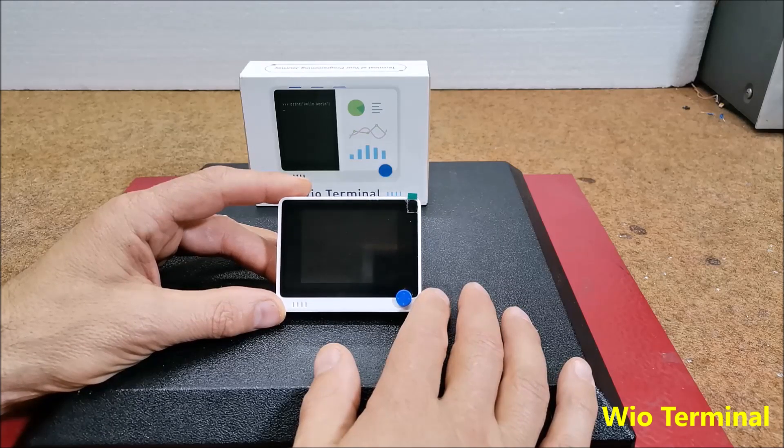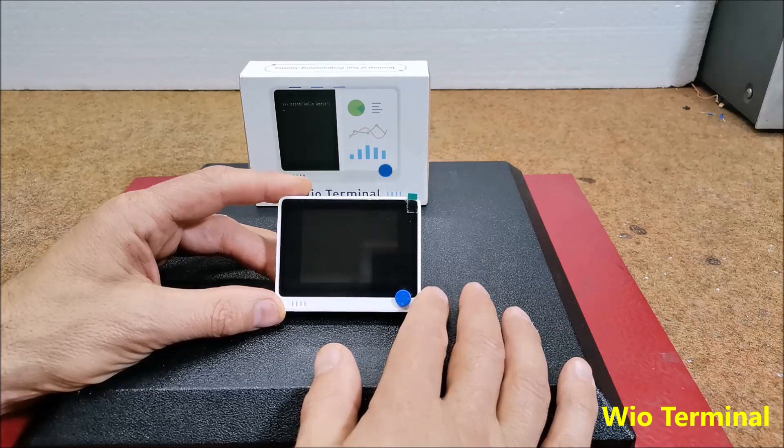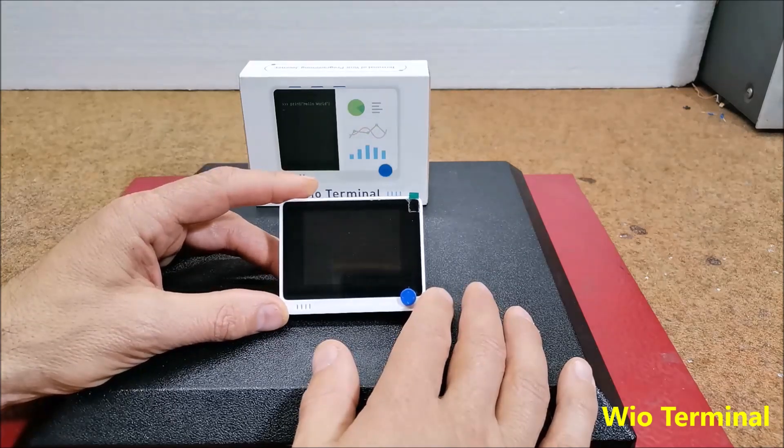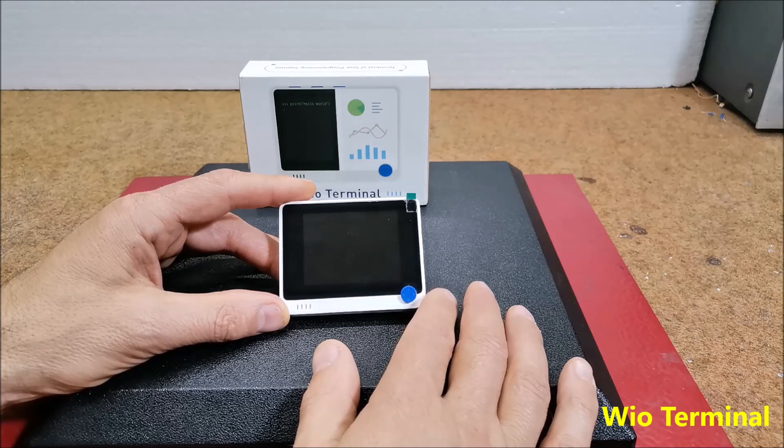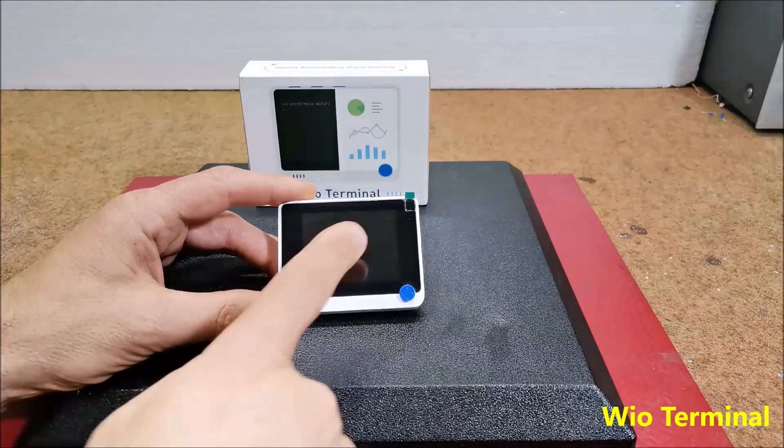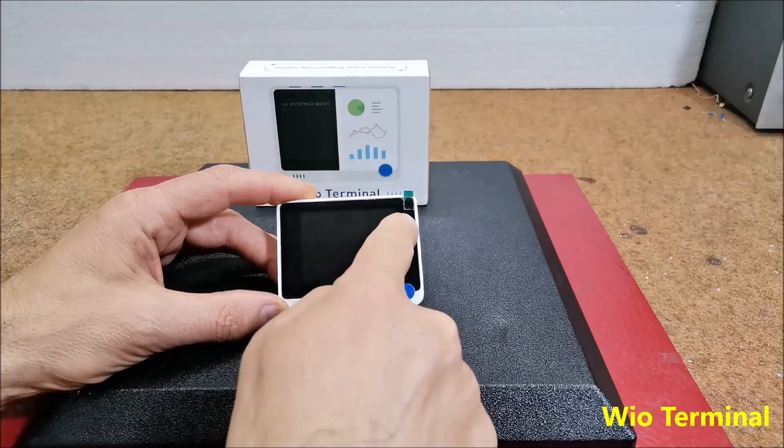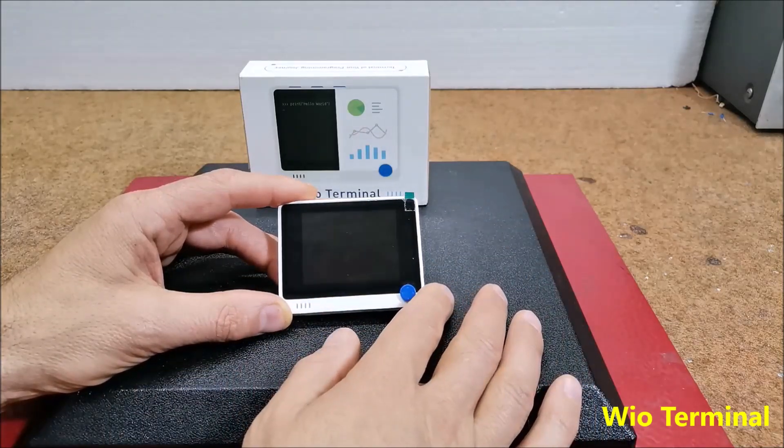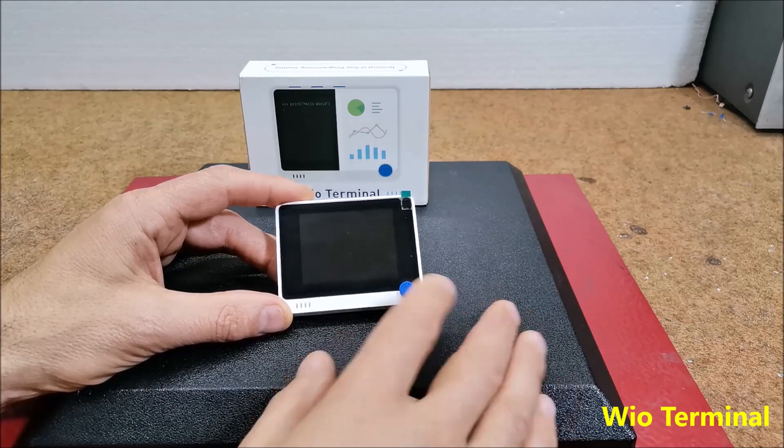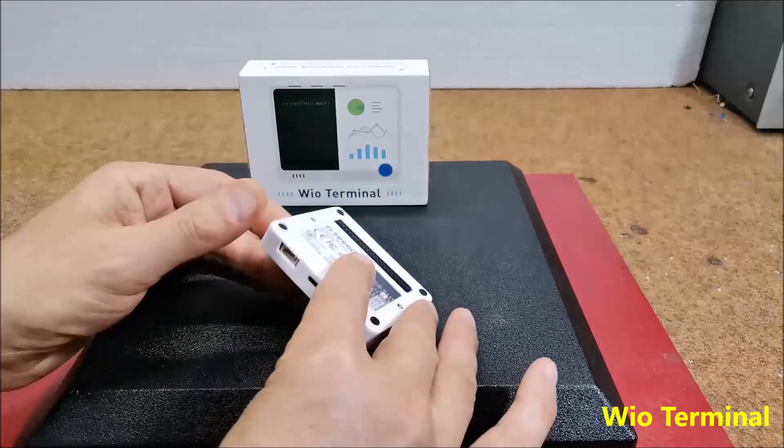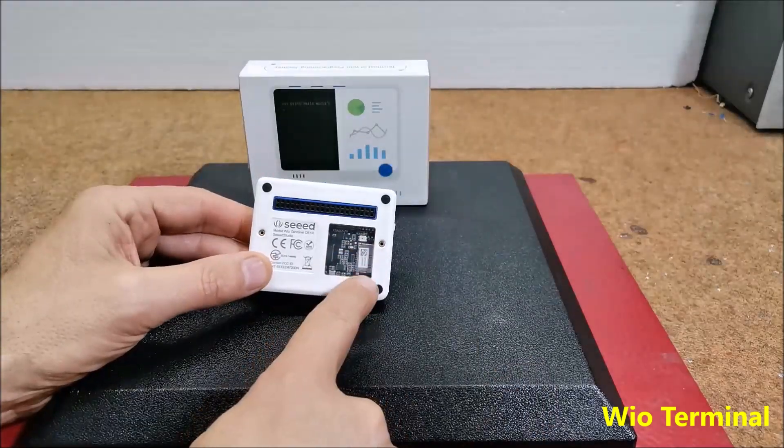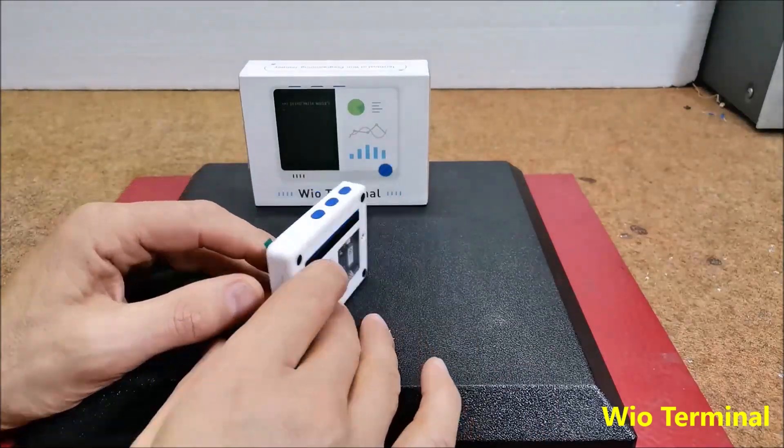It runs at 120 MHz, 4 MB external flash and 192 KB RAM. The WIO Terminal itself is equipped with a 2.4 inch LCD screen, onboard accelerometer, microphone, buzzer, microSD card slot, light sensor and infrared emitter.